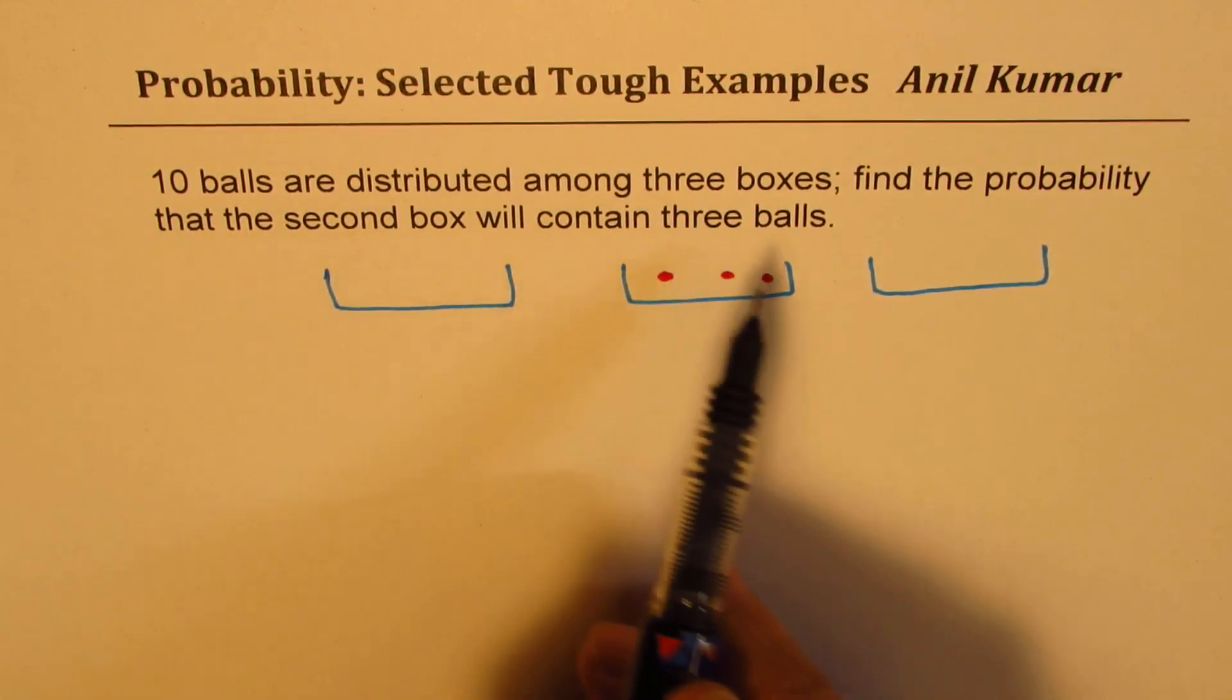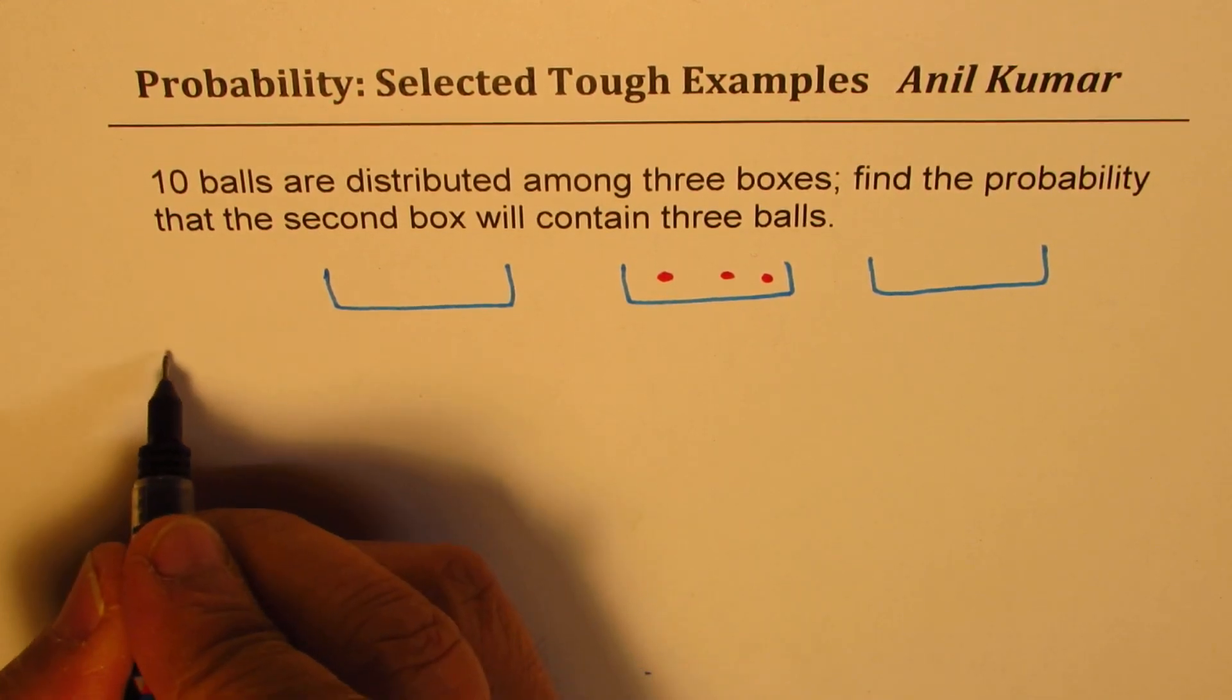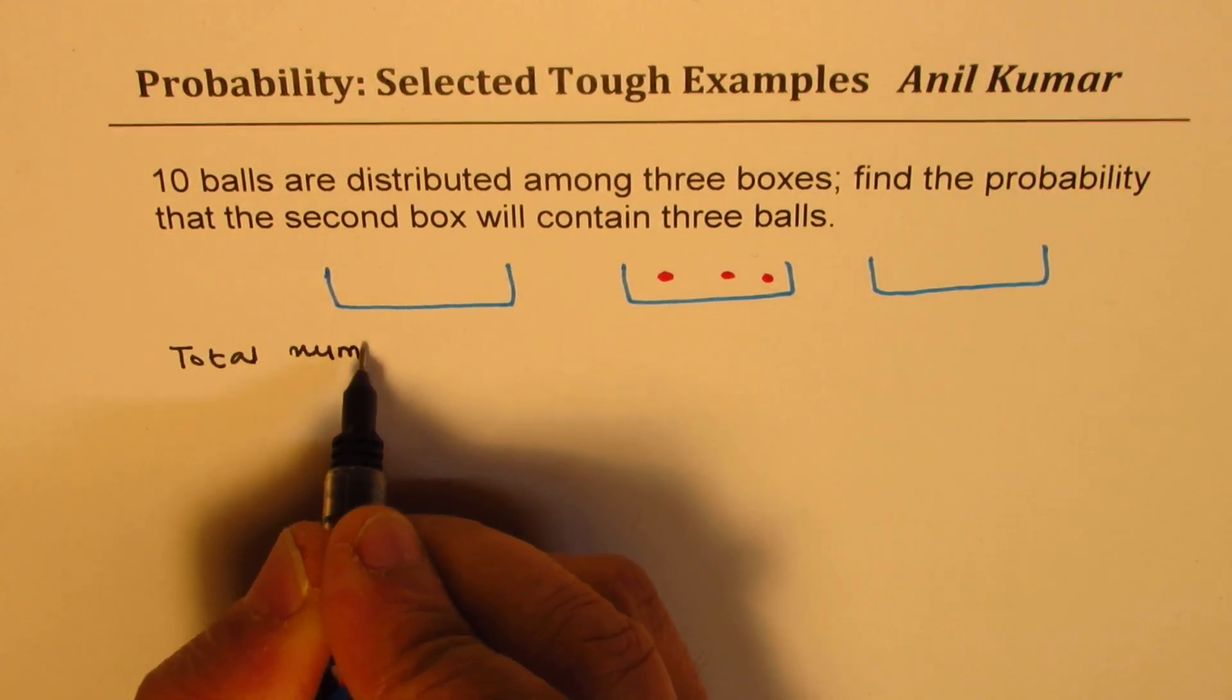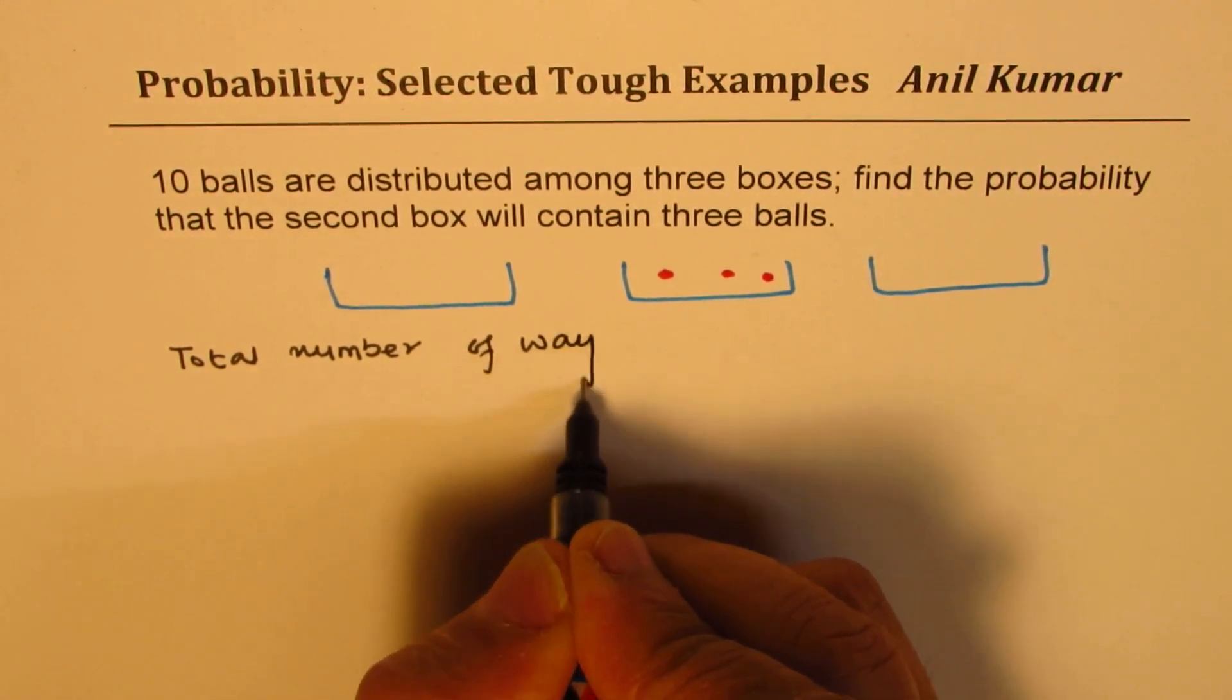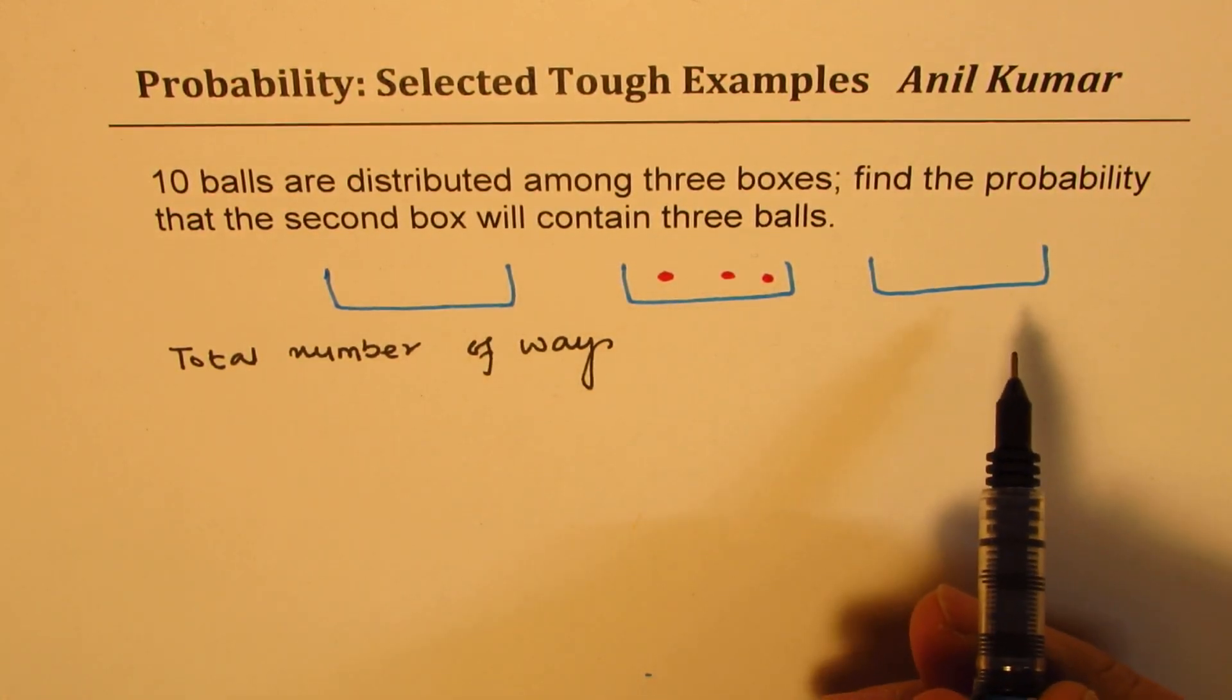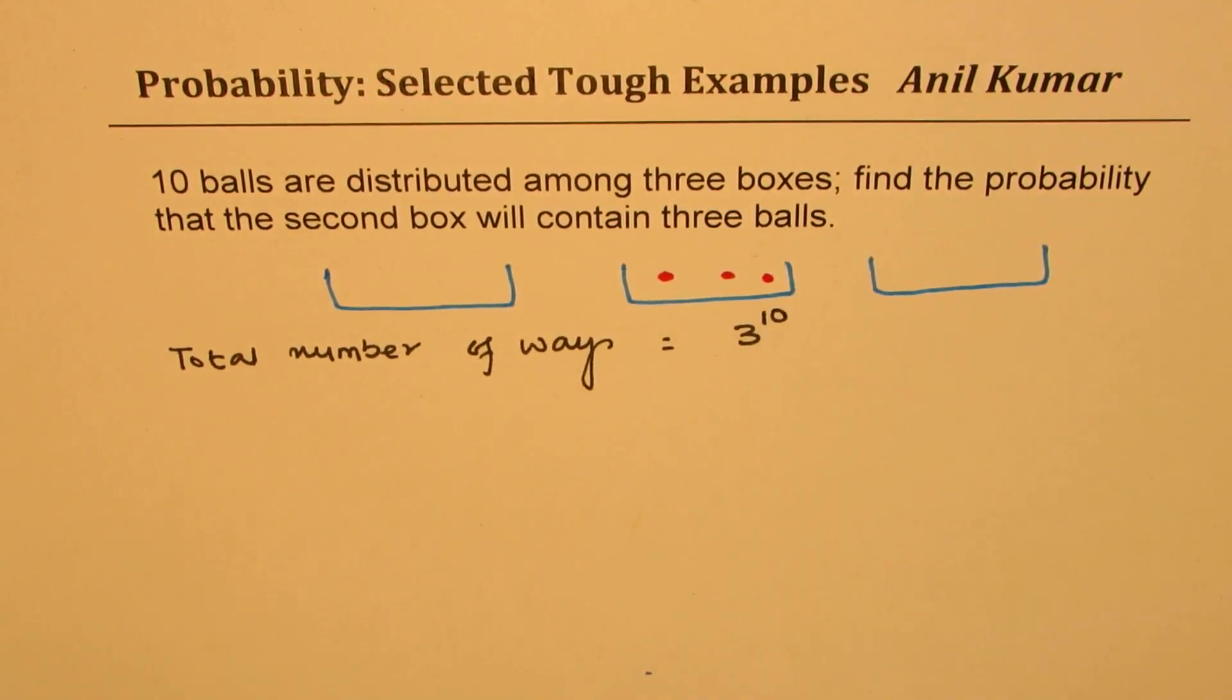Now, since we have 10 balls in 3 boxes, what are the total number of combinations? We can write total number of ways... every ball has the option to get into any one of these 3, so it is 3 to the power of 10. That comes in the denominator.